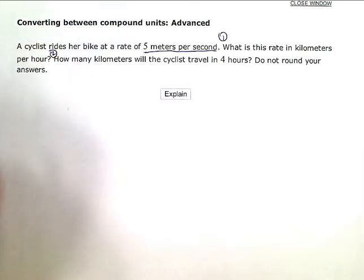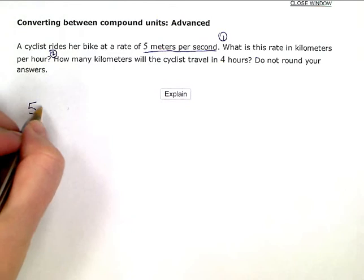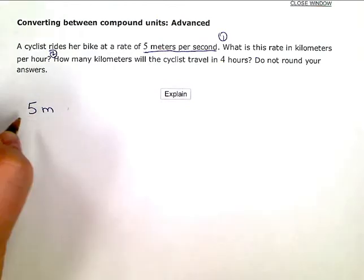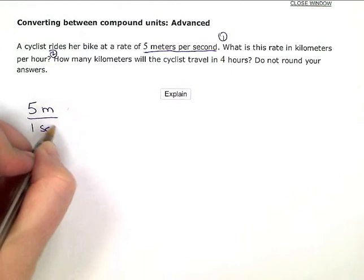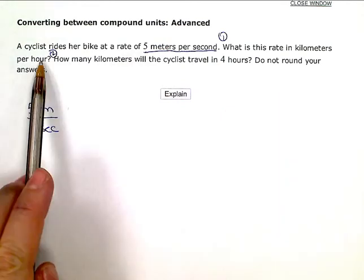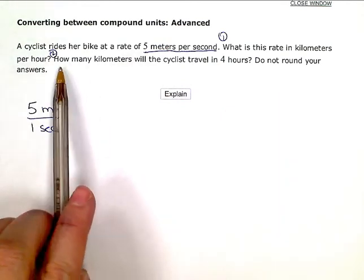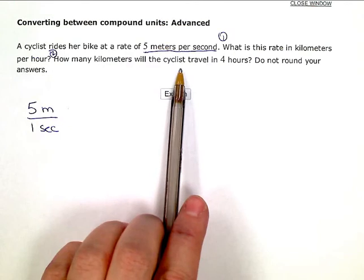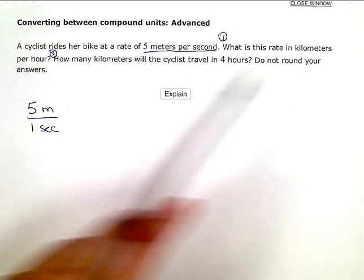First thing I need to do is take this 5 meters every second and I need to convert it into kilometers per hour. And then I'll answer the question, how many kilometers will the cyclist travel in 4 hours? Do not round your answers.